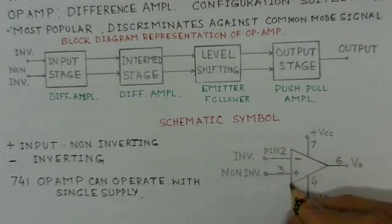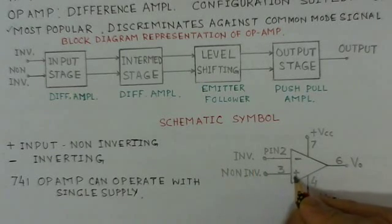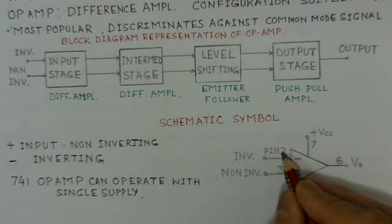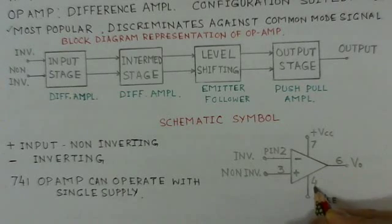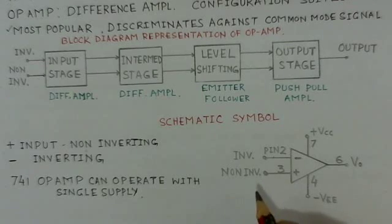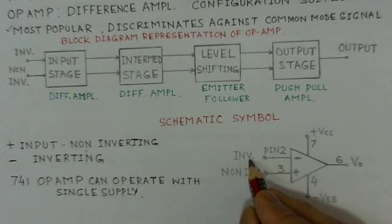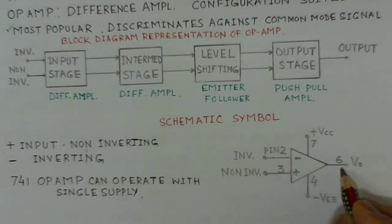The schematic symbol for the operational amplifier shows the negative or inverting input, the positive or non-inverting input, the output, and the corresponding pin numbers 2, 3, 4, 6, and 7. VCC is the positive supply and there is a negative supply. V0 is the output. When an input is applied at the inverting terminal, the output will have a 180-degree phase-shifted version of the input signal.